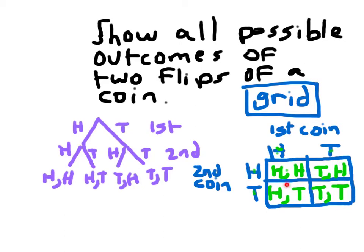Then there's one, two, three, four possible outcomes. A grid will work if you have two things that you're finding the outcomes for, in this case a first coin and a second coin. Those are our four possible outcomes. Same possible outcomes as our probability tree.